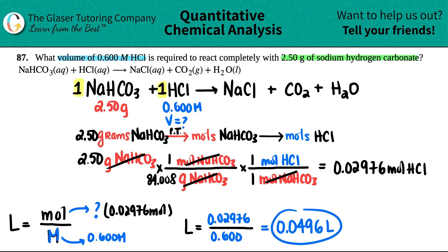If you need to convert this into milliliters, you just have to multiply this number by a thousand. So you would get 49.6 mils, but they didn't specify, so I'm just going to leave it as this. And there you go. So what volume do we need to run this reaction? I need 0.0496 liters or 49.6 milliliters. And that's it.